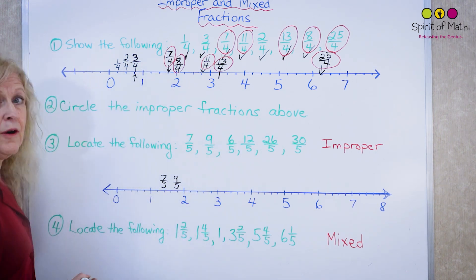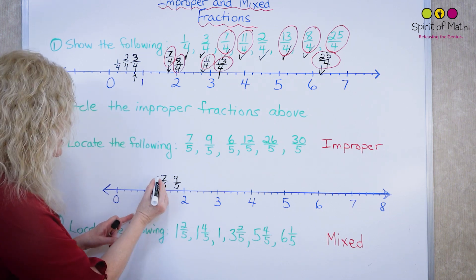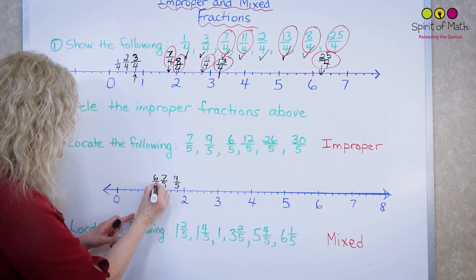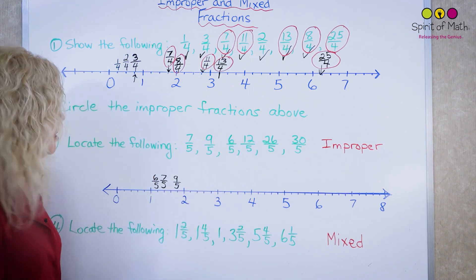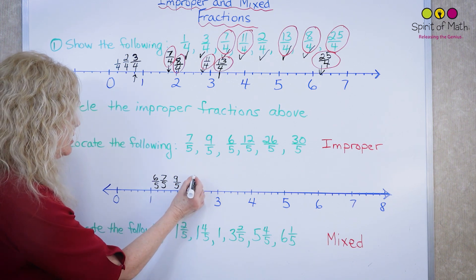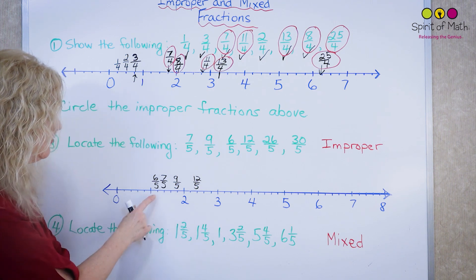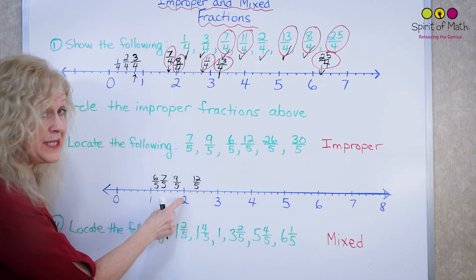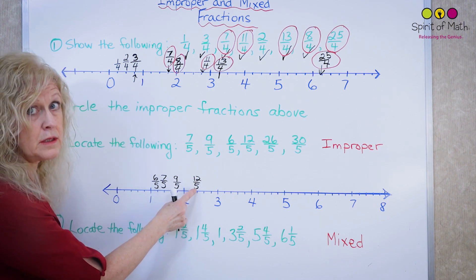Six fifths. So there's five up to the one and another one makes the six, six fifths, and that's right before the seven fifths. Twelve fifths. I'm at nine, ten, eleven, twelve. So this is twelve fifths. Now think about this. This is five fifths, so this one will be ten, eleven, twelve. There's the twelve fifths.